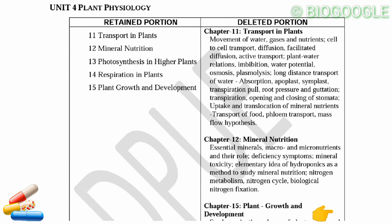Next change is in Chapter 11: Transport in Plants. Topics include movement of water, gases, and nutrients; cell-to-cell transport; diffusion, facilitated diffusion, active transport; plant water relationships; imbibition, water potential, osmosis, plasmolysis; long-distance transport of water, absorption, apoplast, symplast, transpiration pull, root pressure, guttation, transpiration, opening and closing of stomata; uptake and translocation of mineral nutrients; transport of food, phloem transport, and mass flow hypothesis.